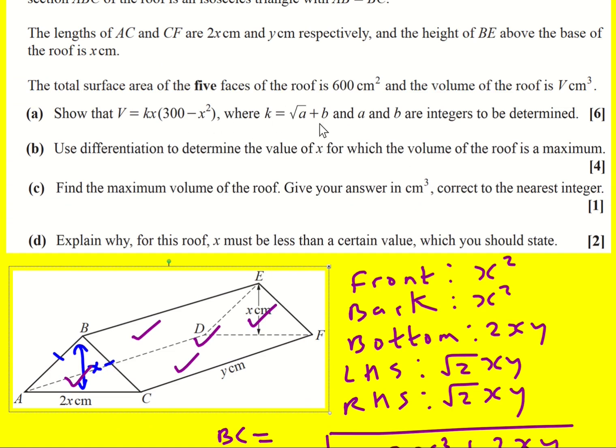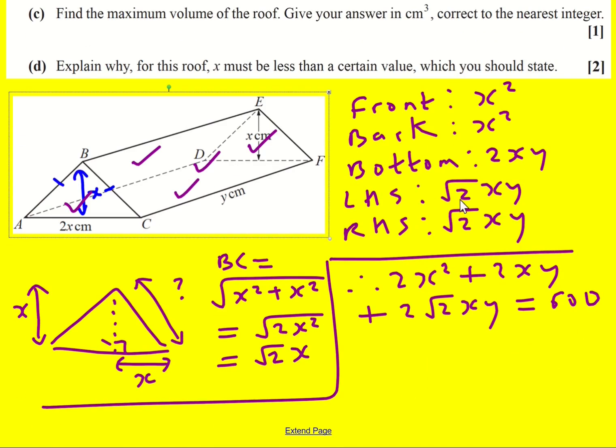So I can add all of these up and I'm going to get 2X squared plus 2XY plus 2 root 2XY, because I've got two lots of this, is equal to 600. Well, I need to work out what Y is, that's the main thing.